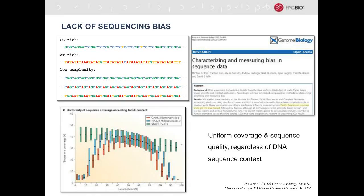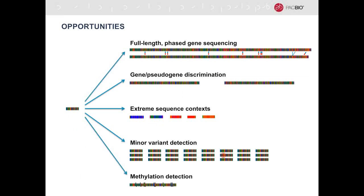Tightly coupled with accuracy is whether all sequence contexts can be sequenced to that same level — and that is not the case with Sanger sequencing or short-read sequencing. A comparison review article showed that Illumina technology has coverage bias relative to GC-rich or AT-rich regions, which is not present in PacBio sequencing, where you get uniform coverage and sequence quality regardless of the DNA sequence context. I'd like to give examples where these characteristics have been leveraged for getting better, more comprehensive gene sequencing and targeted sequencing, addressing some of those NGS dead zones.